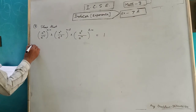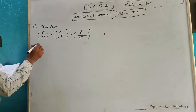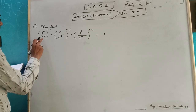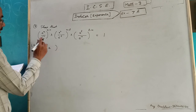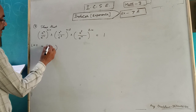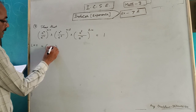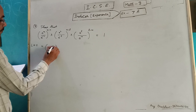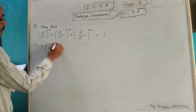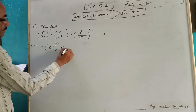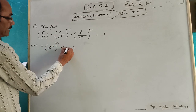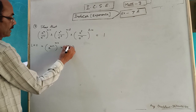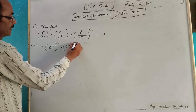Write the left hand side. LHS equals a to the power m minus n. In the numerator, power will be a^(m+l). First bracket common power is m minus n. Add second bracket: a^(n+l), common power n minus l.